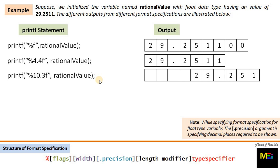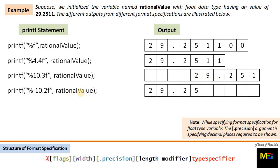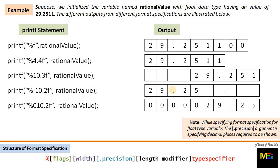In the next statement, we specify data up to 3 decimal places and also a large field width. This format specification acquires 10 fields, and the rational value up to 3 decimal places is placed within those 10 fields. Next is the use of a flag along with width and precision to left-justify the given field width. Then another example shows the use of flag 0 along with width and precision, and the output is shown.